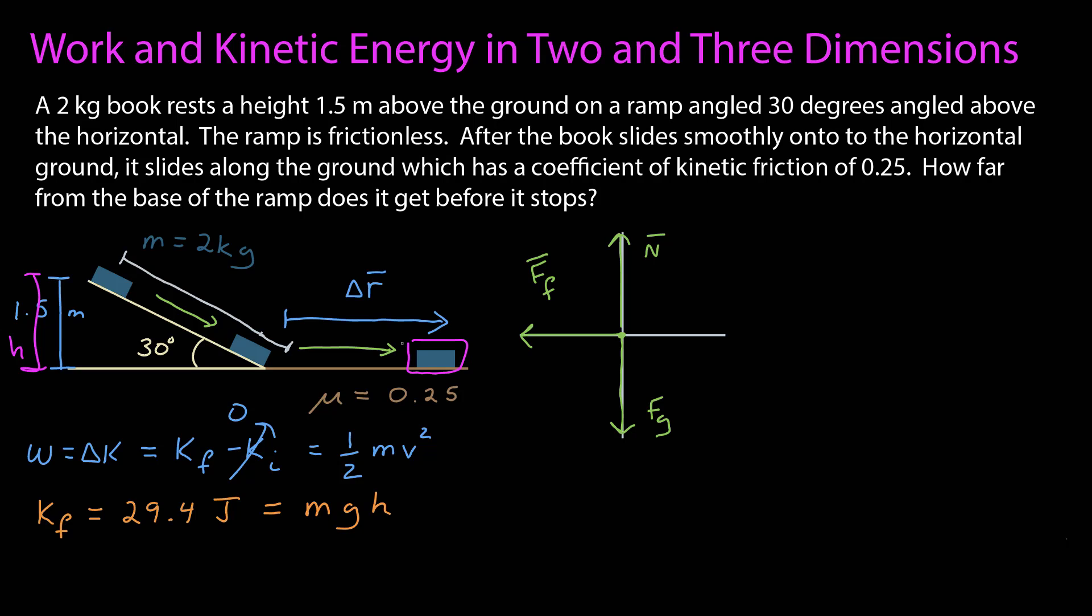What sort of displacement did it go? Well, the displacement starts at this junction, and then it goes to where it comes to rest, and it will be going in a straight line, and I'll call that displacement delta r.